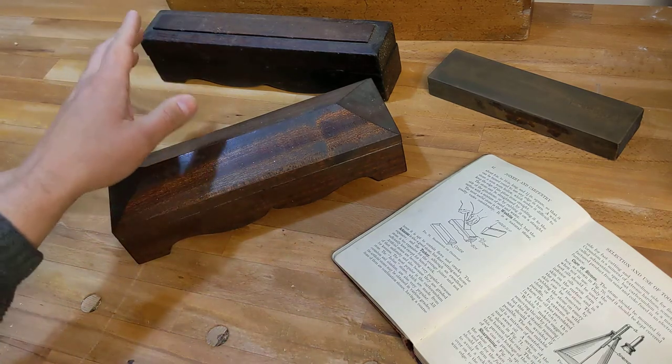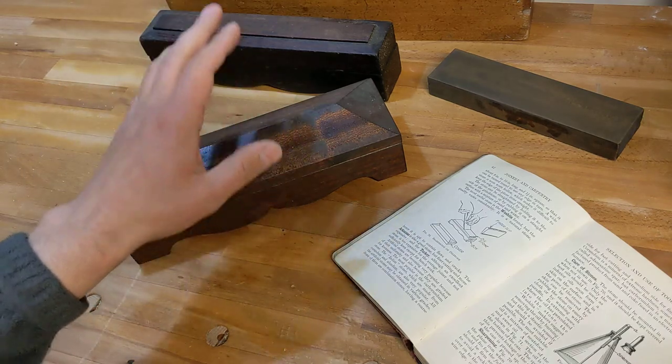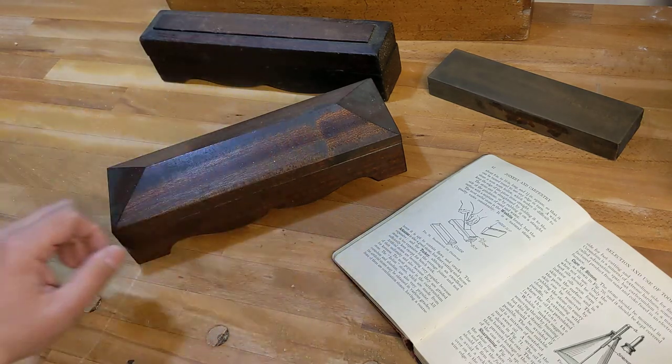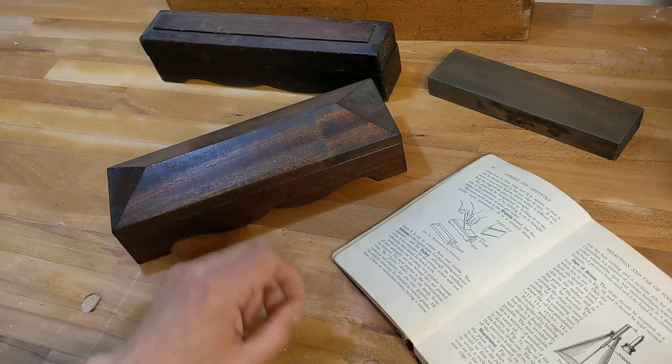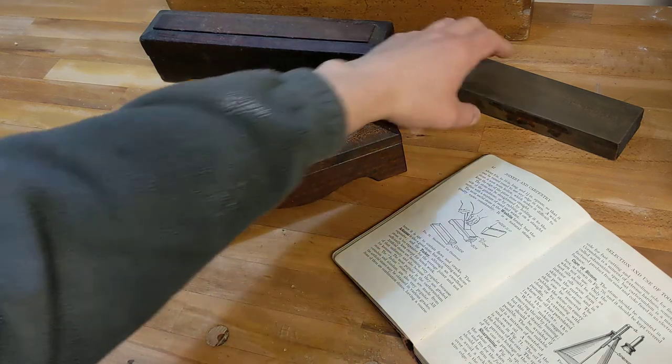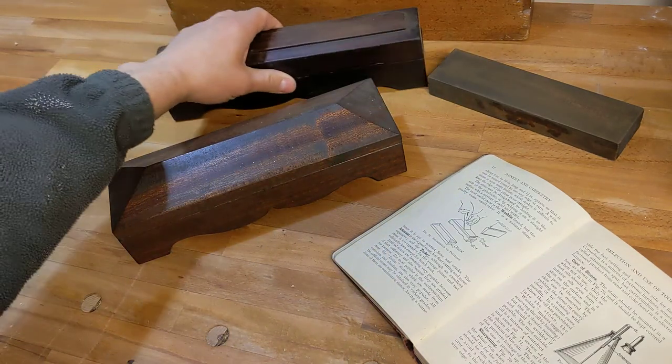Got to be honest I pretty much use one stone for honing that pretty much gets me done and then a strop with a bit of metal polish on it. I quite like very simple stones as well.